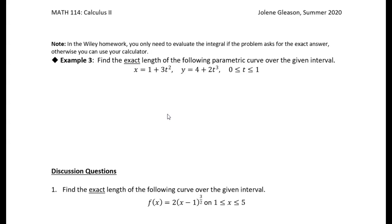So setting it up is just pretty plug and chug, right? So we're going to do the derivative of x with respect to t, and that gives me 6t. The derivative of 1 is 0, the derivative of 3t squared is 6t. All right, and then we have dy/dt. dy/dt is just going to be 6t squared.